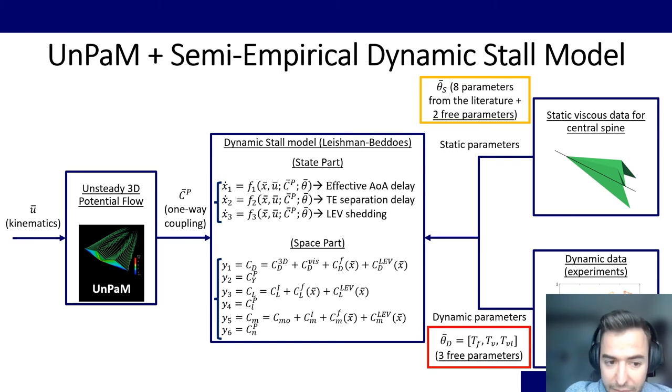It basically does transformations to these potential flow coefficients in order to finally get the space part, which are the six force coefficients taking into account not only potential flow but also these dynamic stall blocks. And it is semi-empirical because the model must be fed by static coefficients and by dynamic coefficients coming from the experiments. So in total we get around five free parameters to fine tune in order to make the theory match the experiments.